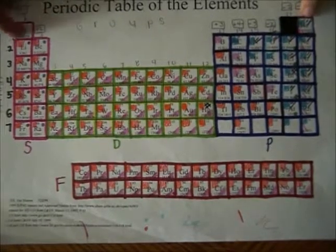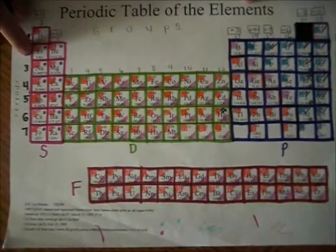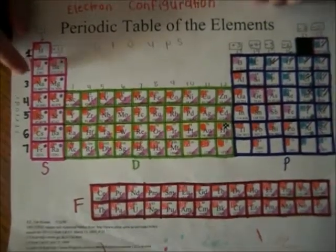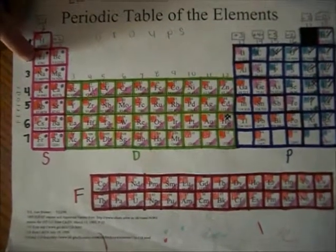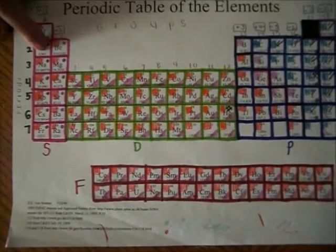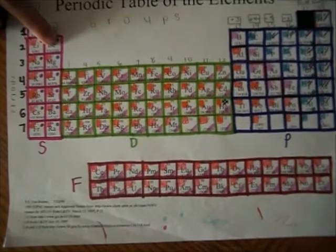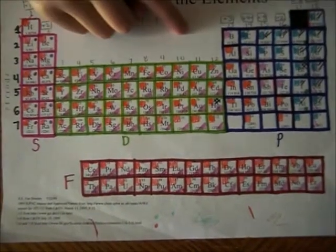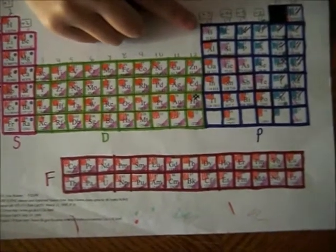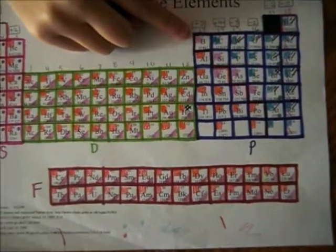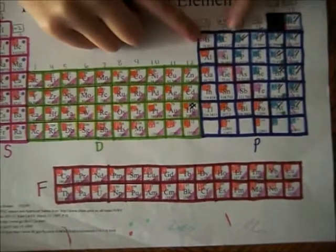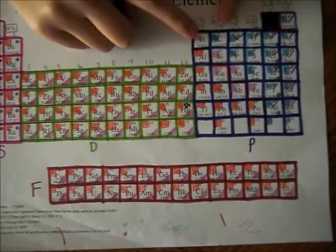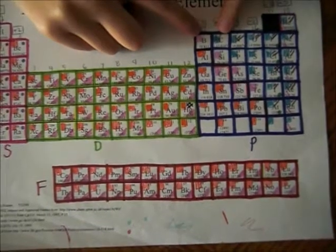You go down to the second period and also count the S block first, which will be 2s2. You stay on the second period and count the P block until you reach carbon. Since it's the second one, it will be 2p2. All together,